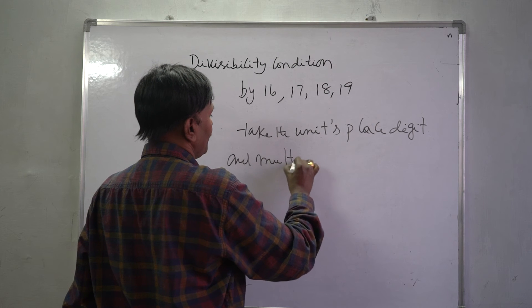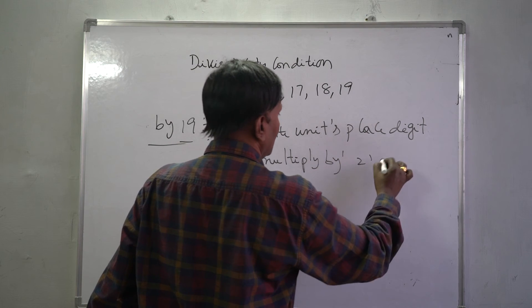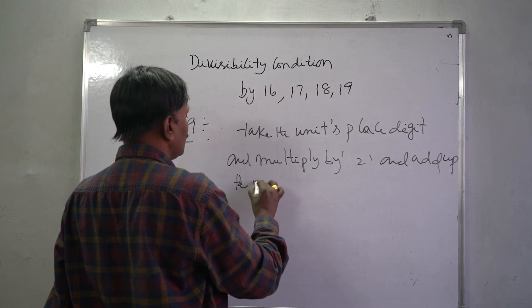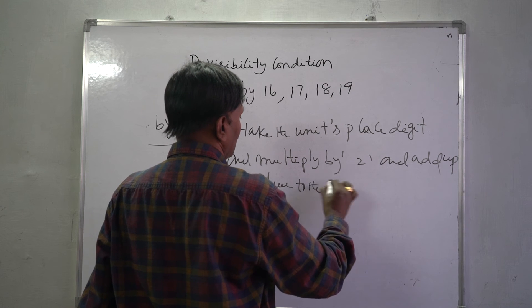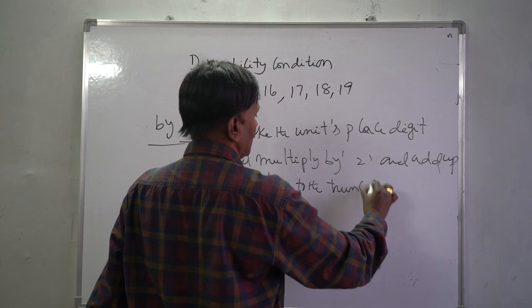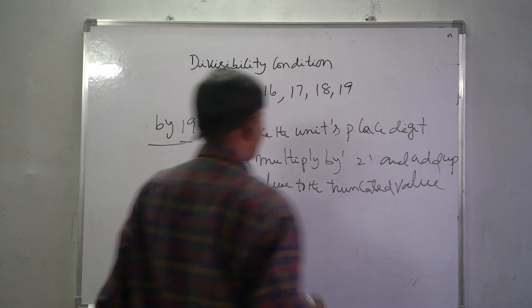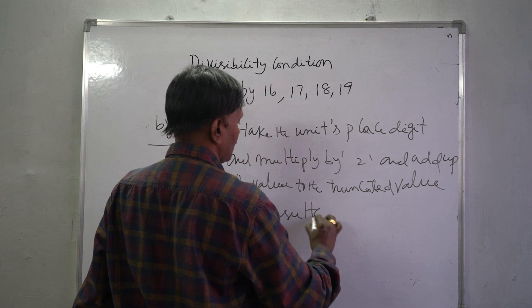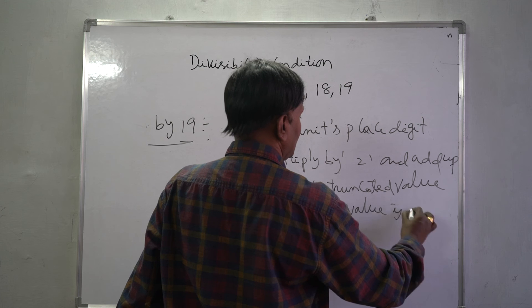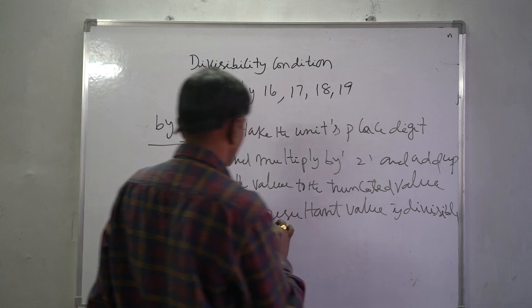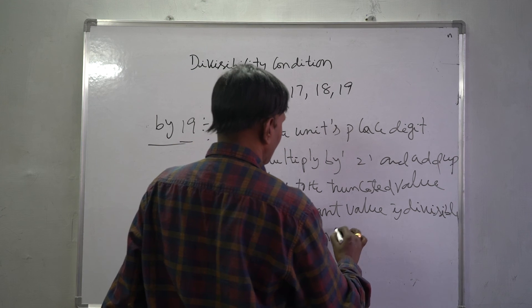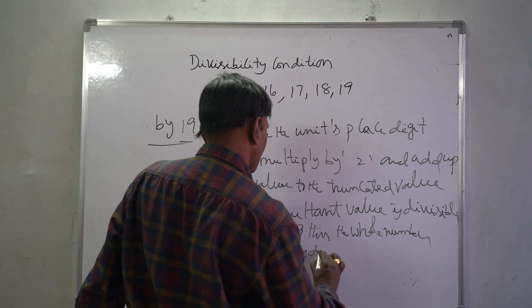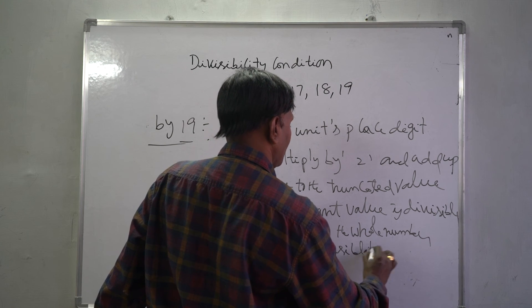For divisibility by 19: take the units place digit, multiply by 2, and add the value to the remaining truncated value. If the resultant value is divisible by 19, then the whole number is divisible by 19.